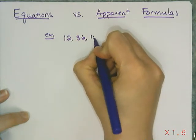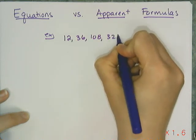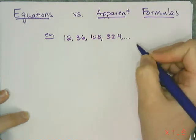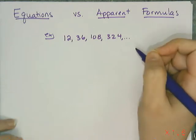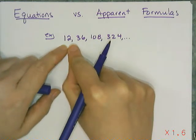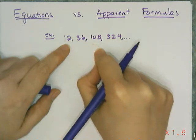We know that we have a sequence here: 12, 36, 108, 324. And we can write the apparent formula for this sequence if it is arithmetic or geometric. If I look at this, I'm either adding - I could be adding 24 each time, but that's obviously not happening here.